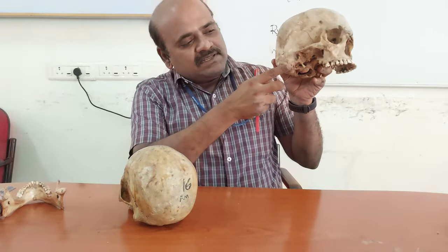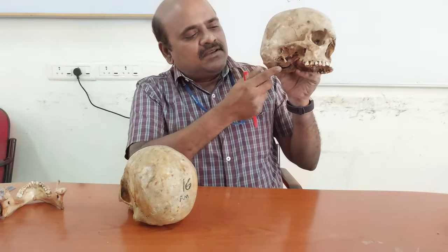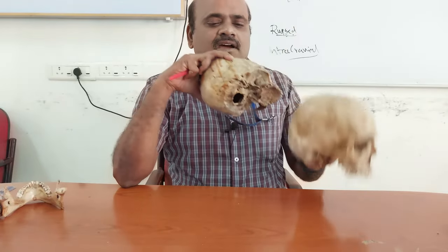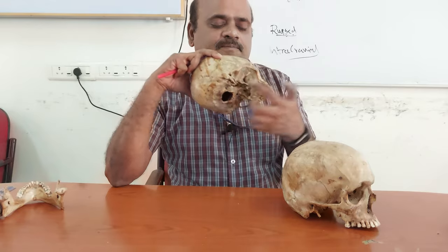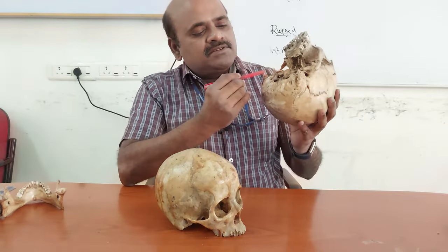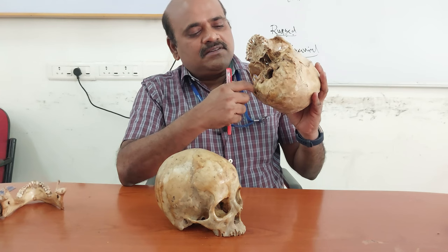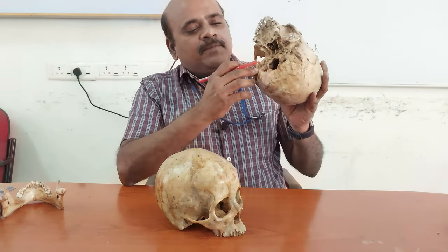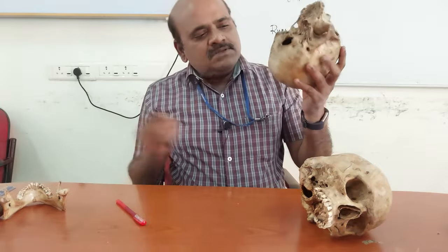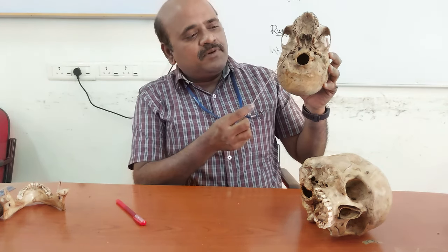Now comes an important discriminant: the mastoid process. The mastoid process in the male is larger and the tip is blunt, whereas comparatively in the female the mastoid process is smaller and the tip is pointed. Then just medial to the mastoid process there will be a groove where the posterior belly of the digastric muscle originates — called the digastric groove. In the male, the groove is deeper, whereas in the female skull the digastric groove — immediately medial to the mastoid process — is relatively shallower.